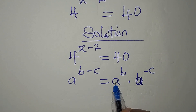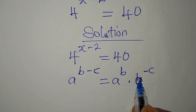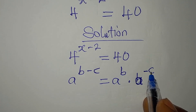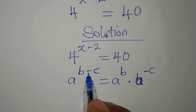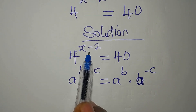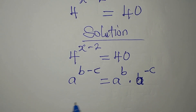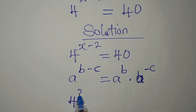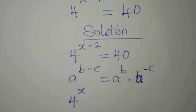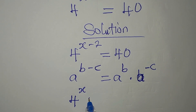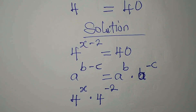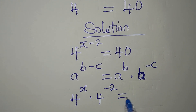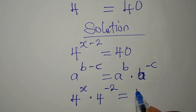So if you pick one of the bases you add the powers, and that will give you something like this. I will do the same thing here. So I have 4 to the power of x, multiplied by 4 to the power of negative 2, and this will be equal to 40.